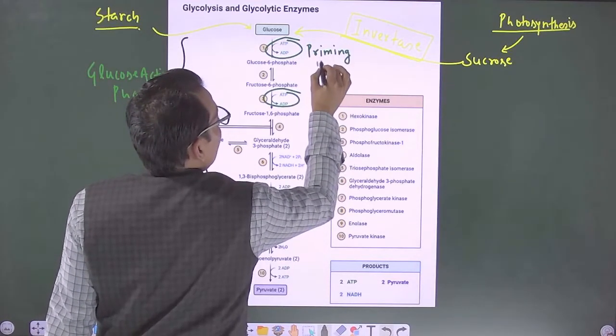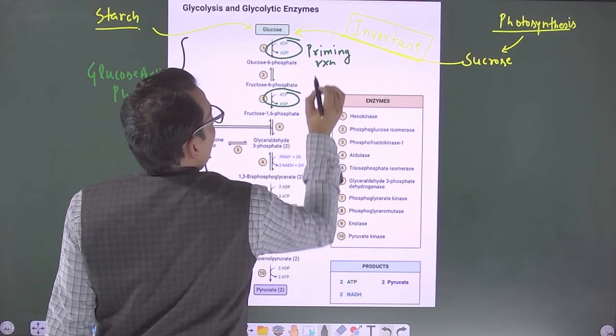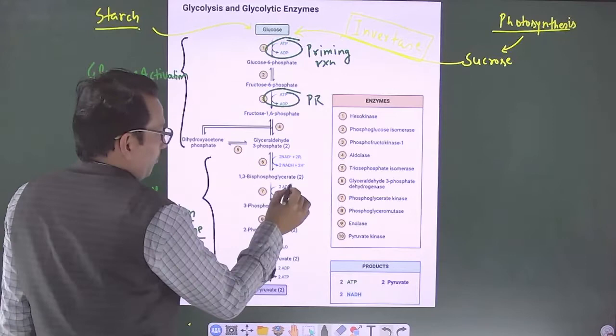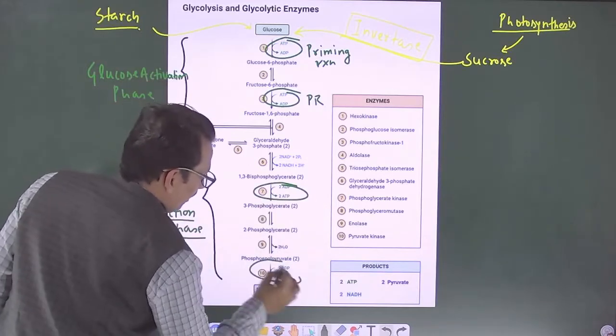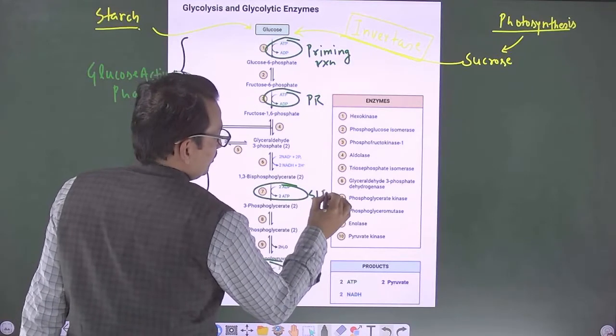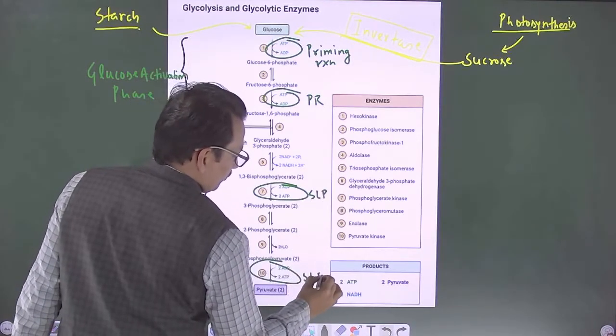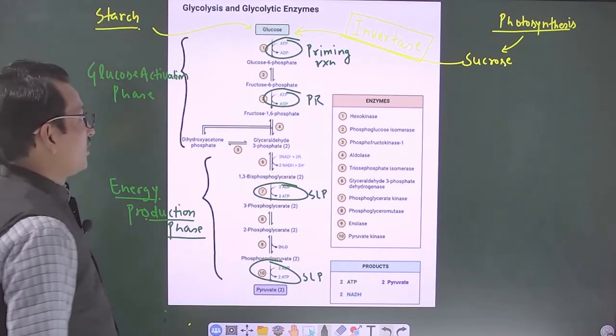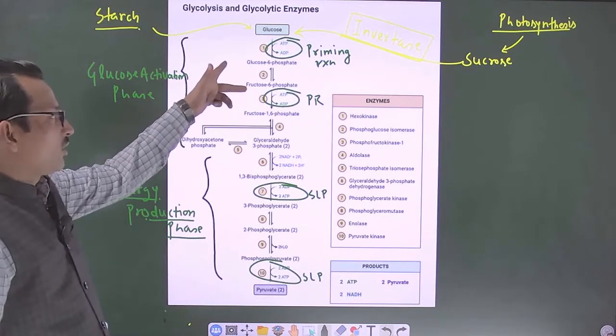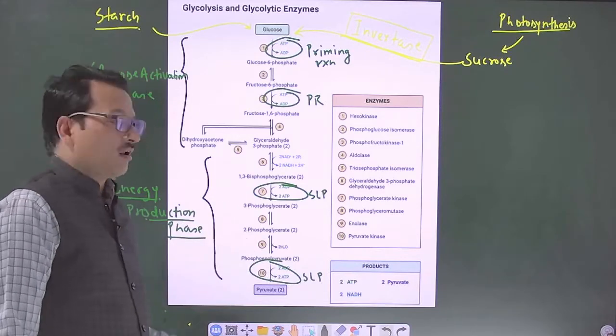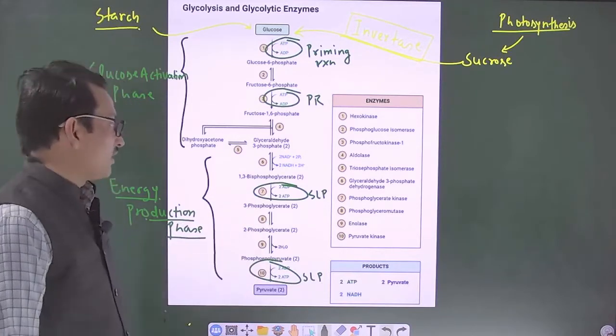What are these named as? Priming reactions and these two are called as priming reactions but where the step number 7 and 10 where energy gets produced they are called as substrate level phosphorylation. In short they are called as SLPs. Okay students there are two places that is 1 and 3 where priming takes place and there are two places 7 and 10 where we can call that SLP takes place.